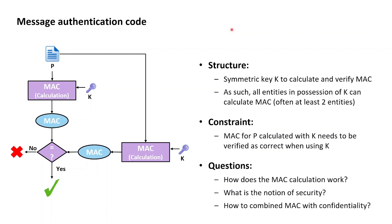Let's have a look at the flowchart on the left side to see how this works. The prerequisite to using message authentication codes is to have a symmetric key that is created and used for the purpose of calculating message authentication code tags. If we now assume to have such a symmetric key K, we can then take our plaintext and together with the symmetric key K trigger a MAC calculation, which will result in a MAC tag.